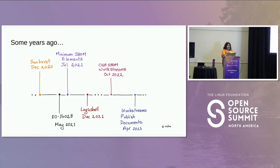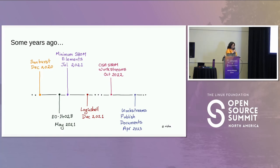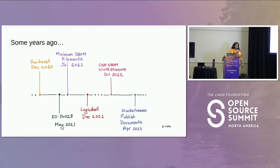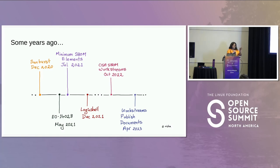A couple of months later they released documentation on what the minimum SBOM elements looked like, so people could start generating SBOMs. For a while nothing really happened, then in December a zero-day called Log4Shell came out and everyone started panicking. Companies are still recovering from it. In the late fall of 2022, CISA published that they had started SBOM work streams tackling different aspects of SBOM, and earlier this year in April they published findings from each of those groups.